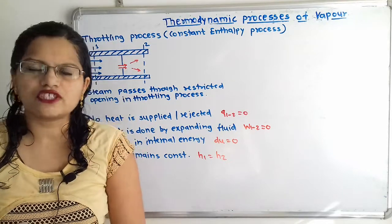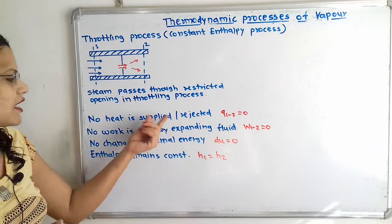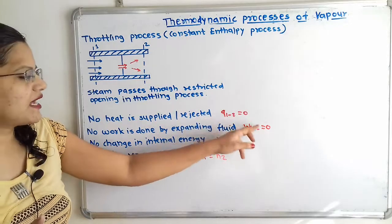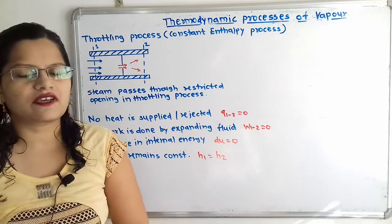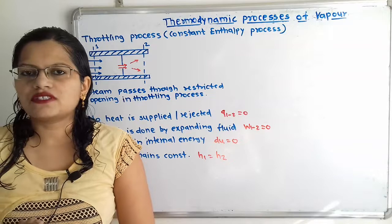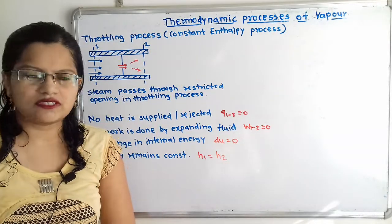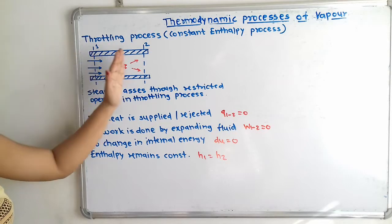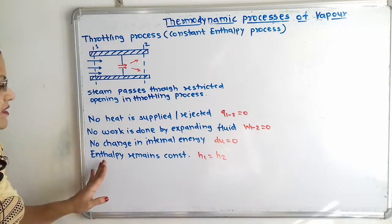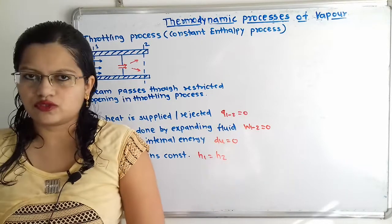Whenever there is a question to calculate the internal energy, work done, and heat supplied during the throttling process, then we have to write all the answers as equal to 0. This throttling process is a constant enthalpy process, meaning enthalpy at point 1 equals enthalpy at point 2 — H1 is equal to H2.